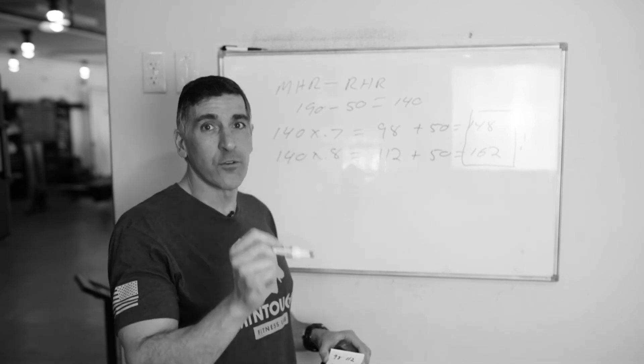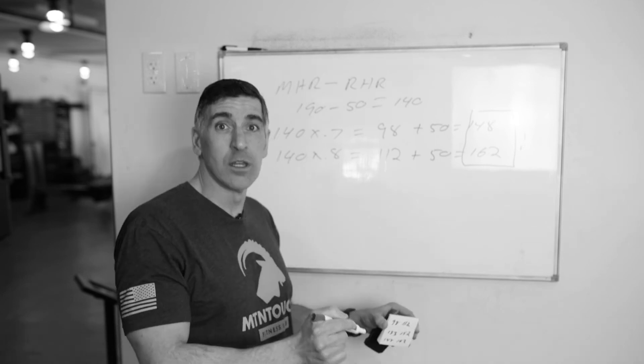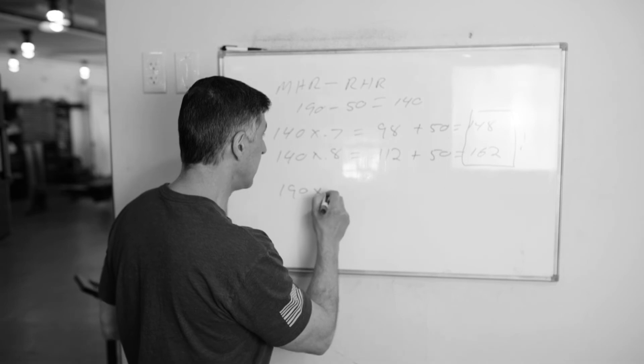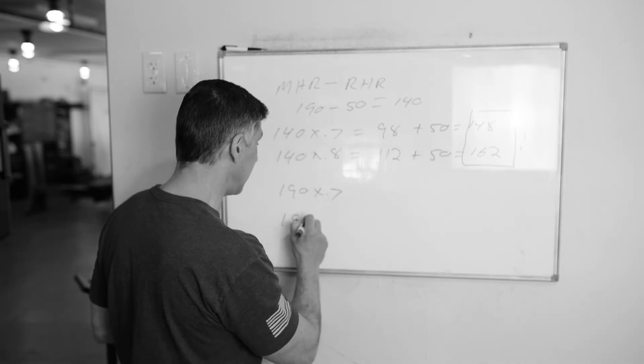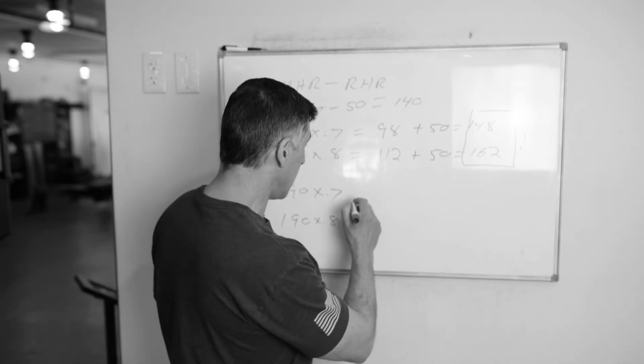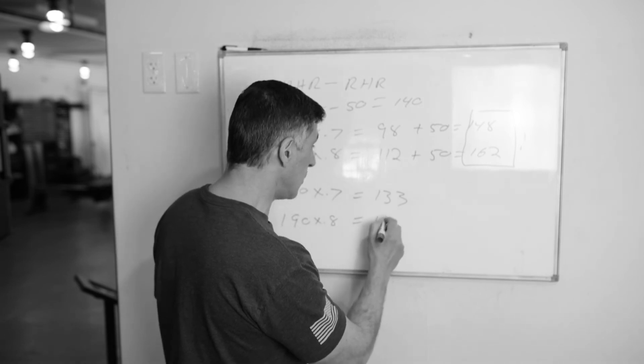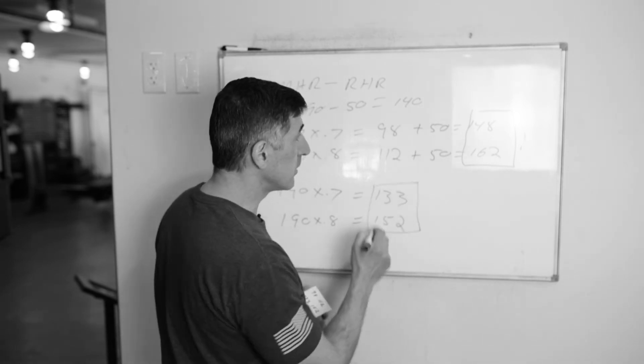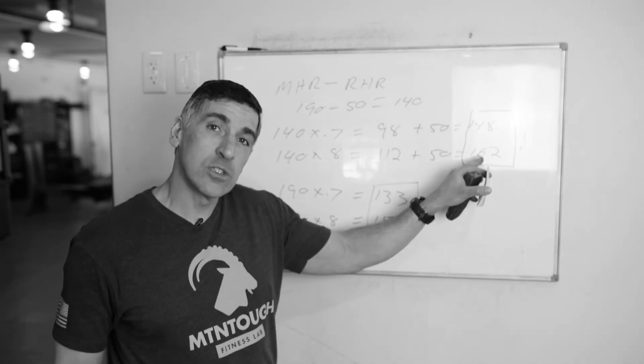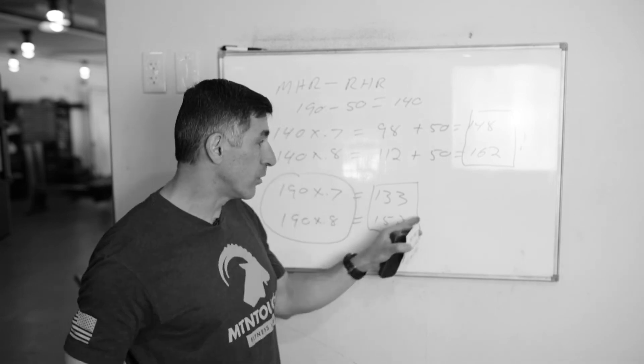If we use the strict formulas the way people traditionally do it, 190 times 0.7 and 190 times 0.8, let's do it real quick and you'll see the difference. If we don't do the resting heart rate piece, you end up with 133 at your lower limit and 152 at your upper limit. And now you see the difference. We are literally 15 beats difference. It's too low.